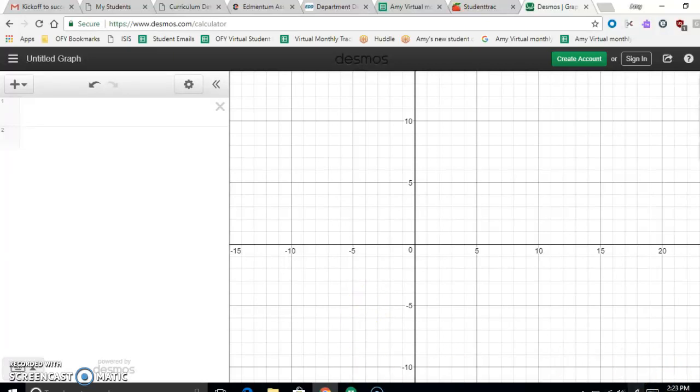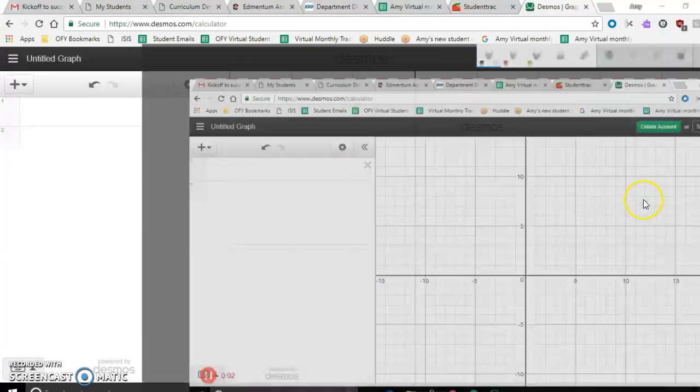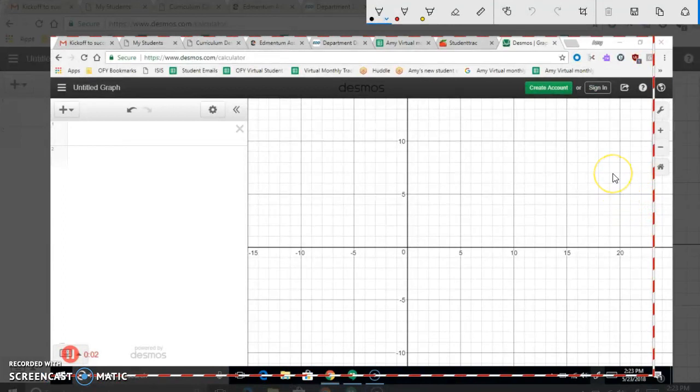Alright, so here's a brief summary on how to plot points. If we're looking at a graph like this, points have an x-coordinate and a y-coordinate.